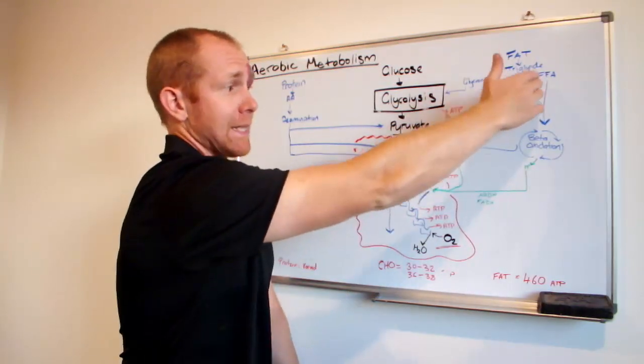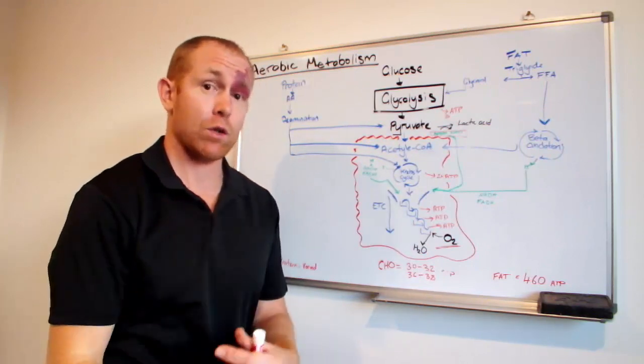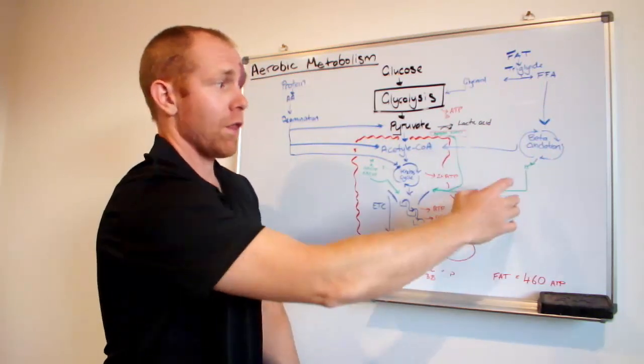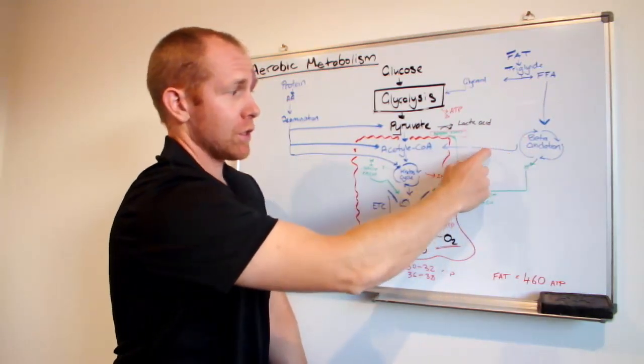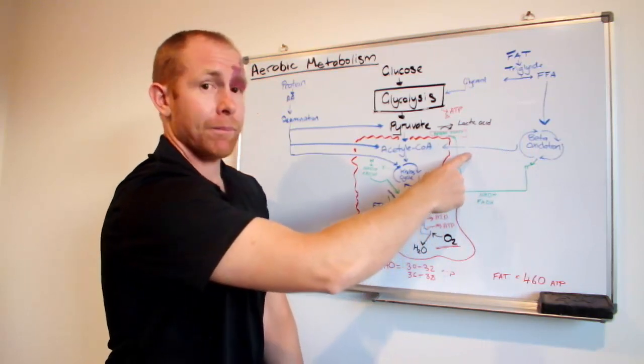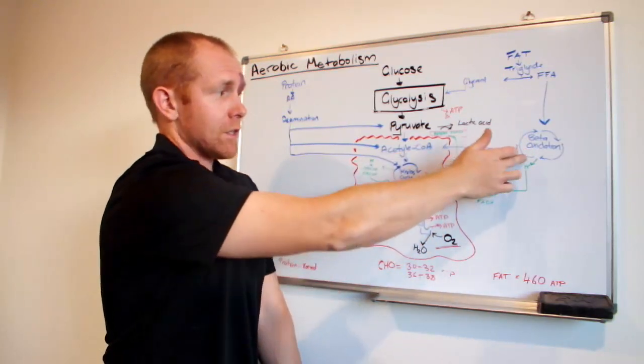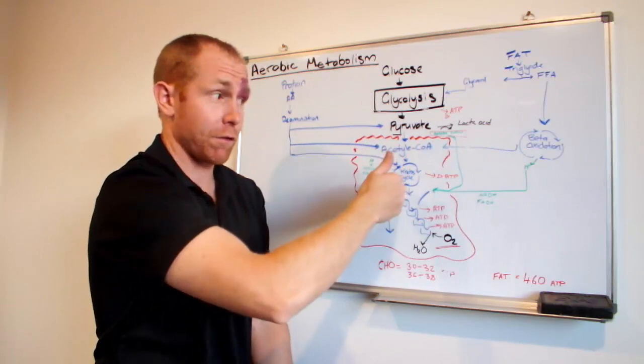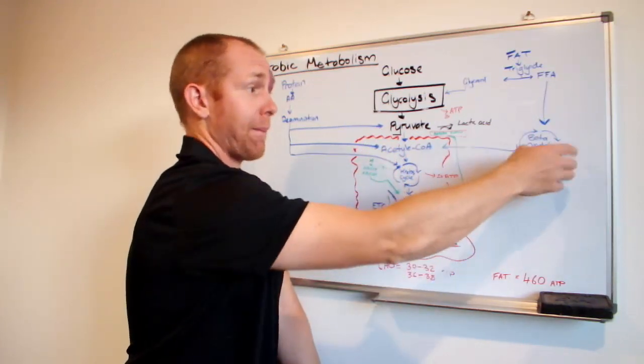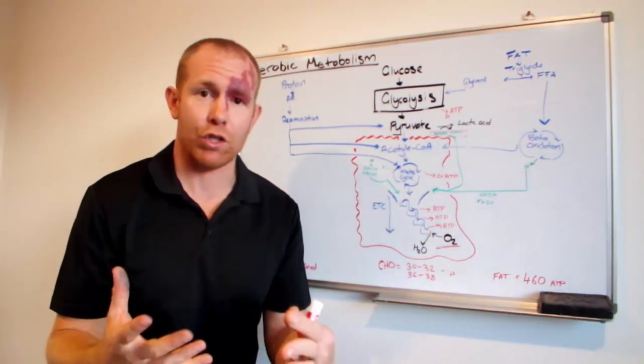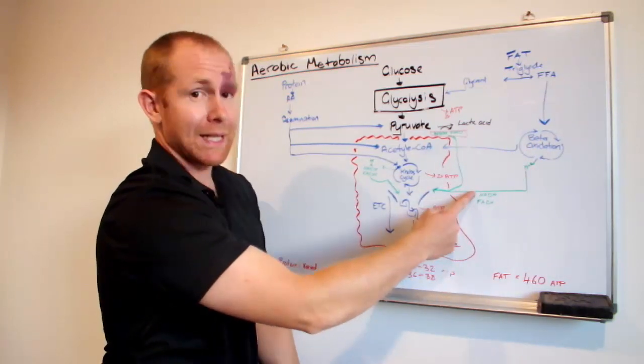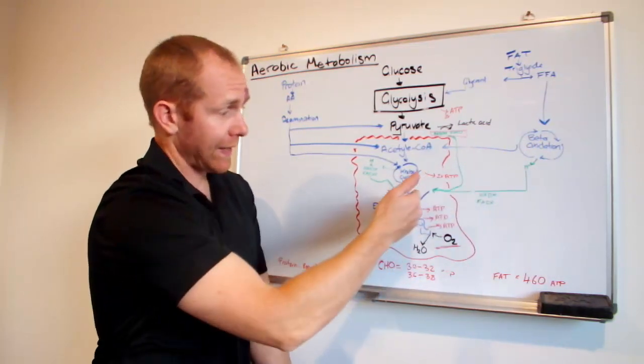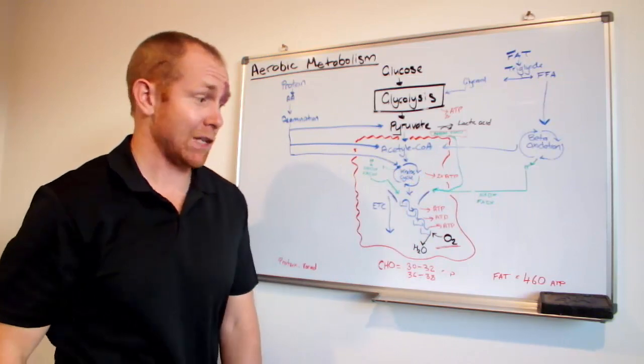The free fatty acid comes down and has to go through a process called beta-oxidation. And what that does is it produces some precursors to acetyl-CoA. So some of that can come in here and be processed from here. And the other thing that beta-oxidation does is make more hydrogen ions. And they come down here shuttled by NADH and FADH and they come into the electron transport chain as well.